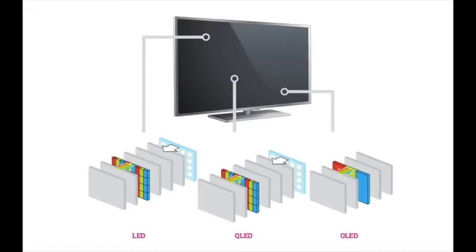Hello everyone. When it comes to choosing a TV, when we go to the store we look at basic things like the inches we want, or the resolution we are looking for — HD, full HD, 4K, 8K, whatever we are looking for. But when we get to the store we see that there are different lighting technologies within each brand, and they seem to be different from each other. What does each technology mean? What are the differences? Which one is more convenient for me? Which one is better?